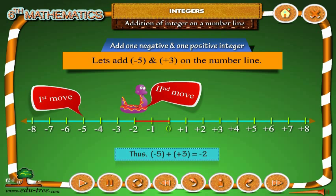Thus, minus 5 plus plus 3 is equals to minus 2.